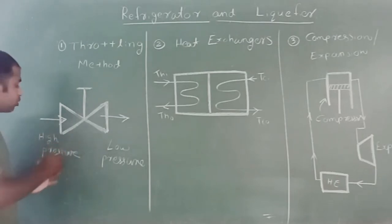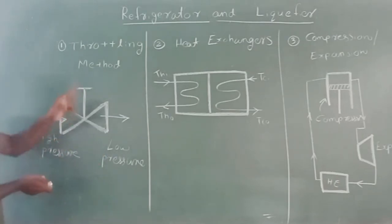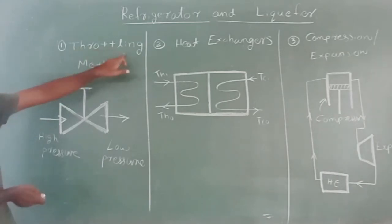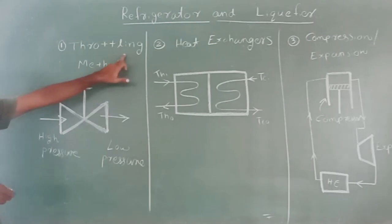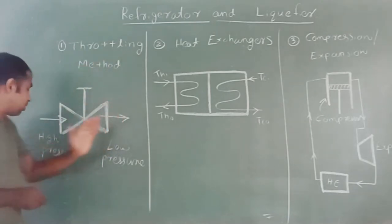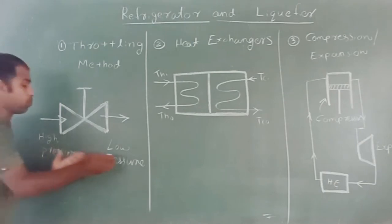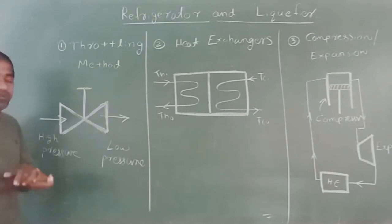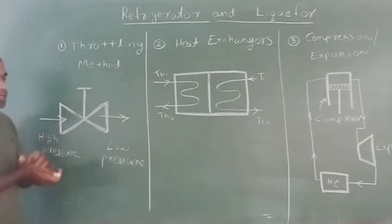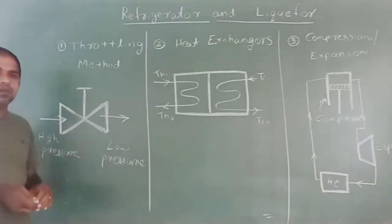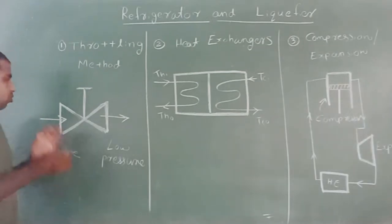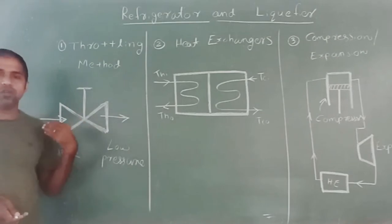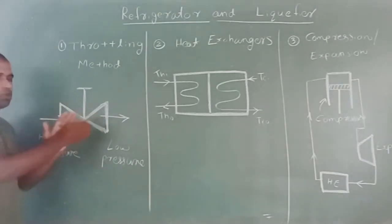The specialty of this particular throttling process is that it is known as the constant enthalpy expansion process. During the throttling method, enthalpy remains constant. While performing this throttling operation, the high pressure zone decreases to low pressure zone, and also temperature decreases to a very low level, if you are performing that operation in the cooling range. I have already explained the details about this throttling operation in connection with the Joule-Thompson coefficient in the last video. So this is one of the methods for producing low temperature.